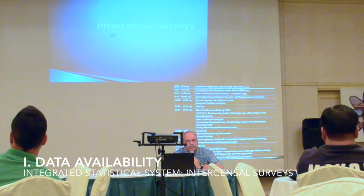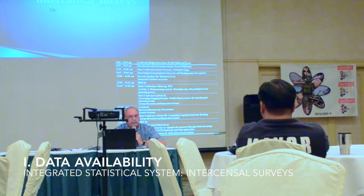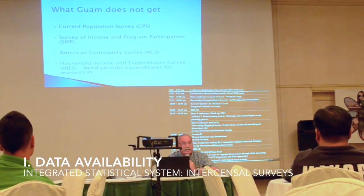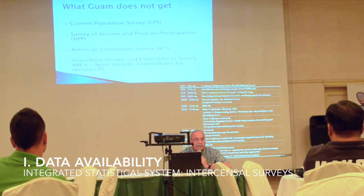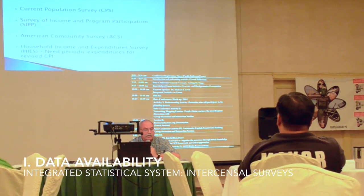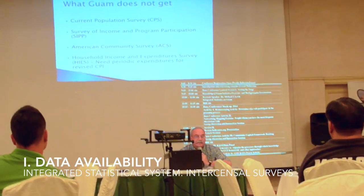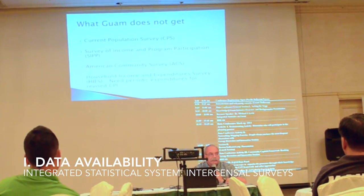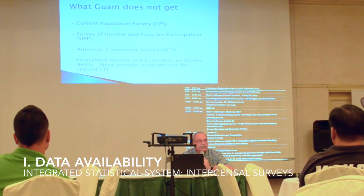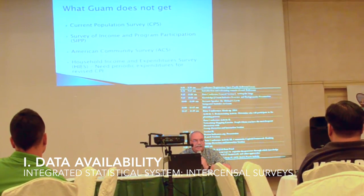The second element of an integrated statistical system is intercensile surveys. Between censuses, you get surveys. Unfortunately for Guam, you don't get what you'd get if you were a state. You don't get the Current Population Survey, taken every month. You don't get the Survey of Income and Program Participation. You don't get the American Community Survey, which is really the worst statistical gap — because in the states, every month, one one-hundred-twentieth of the population is enumerated and statistics compiled over time. You should be getting it, but you're not.